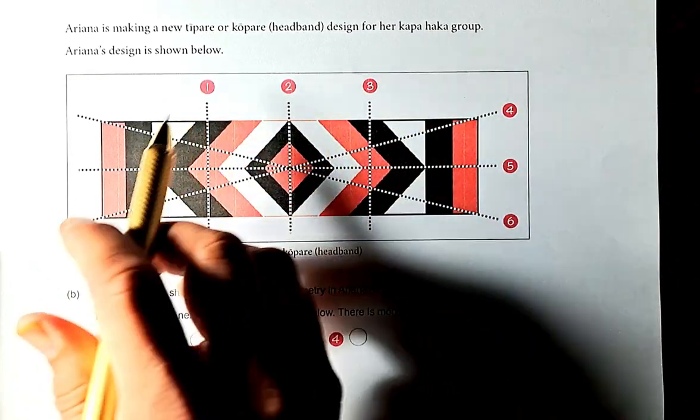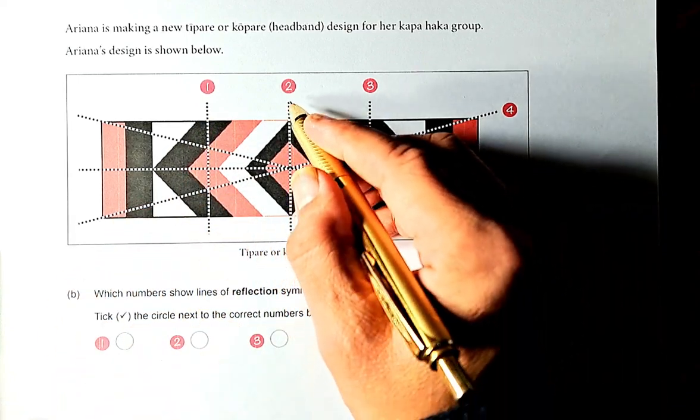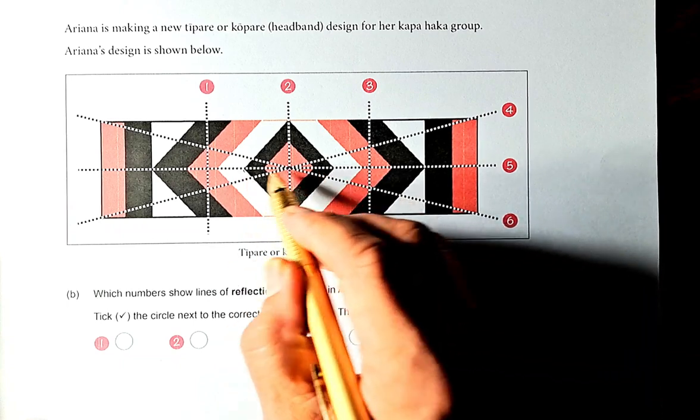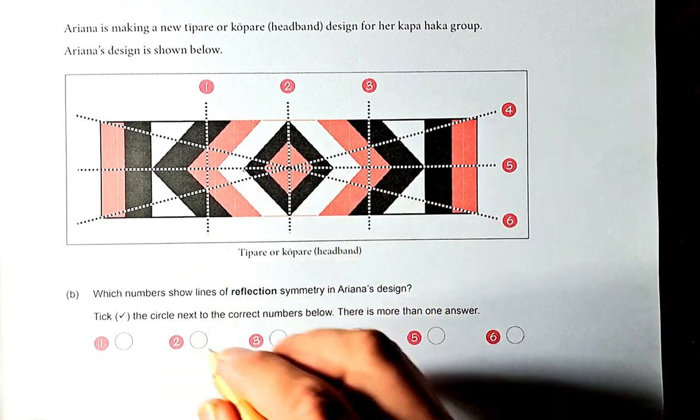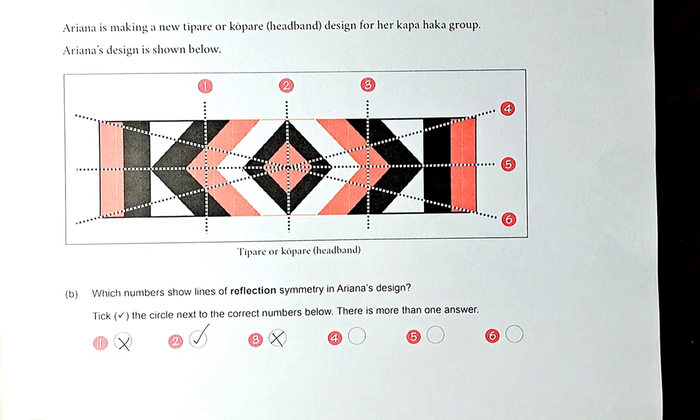So 1 and 3 are definitely not. If you look at this shape, they are not line symmetry. If you look at 2, it is. The point here and the point here are reflection. So we can say 2 is a reflection. 1 and 3 are not. How about 4, 5, 6?